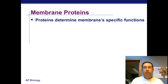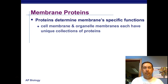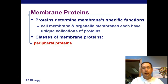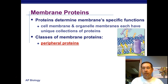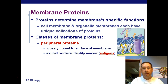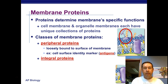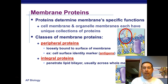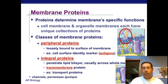Proteins determine the membrane-specific functions. Cell membranes and organelle membranes each have unique collections of proteins. There are peripheral proteins on the outer surface, loosely bound to the membrane — these are the cell surface markers and antigens. Integral proteins are inside the cell membrane and usually span the whole membrane: transmembrane proteins, transport proteins, channel pumps, and permeases.